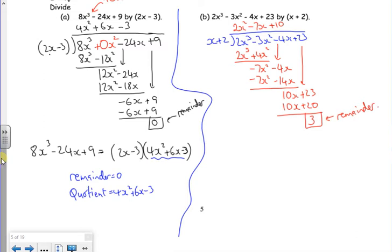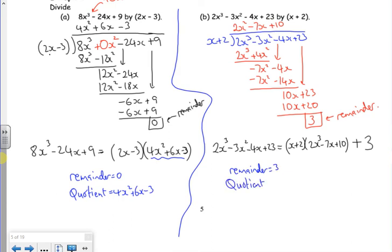So if I write it out, 2x cubed minus 3x squared minus 4x, add 23 is the same as x plus 2, the divisor, 2x squared minus 7x plus 10, the quotient. And now, because it doesn't fit in like the last one, I've got a remainder of 3. So my remainder is 3. And my quotient is 2x squared minus 7x, add 10 there.